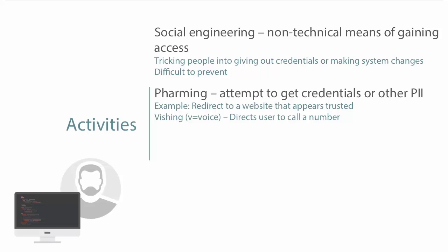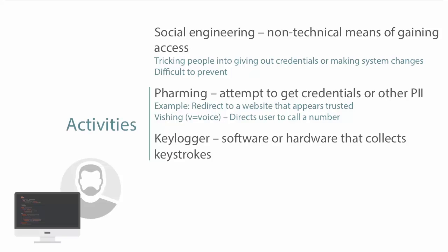Vishing has been a very common attack in the last 18 months, leading to a lot of federal investigations. It's a hard attack to trace — other than the phone number, which could be a throwaway cell phone. Experienced social engineers have managed to gain a lot of information from people and remove money from their accounts.